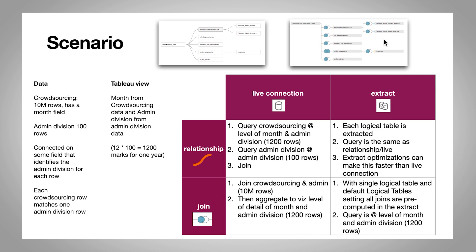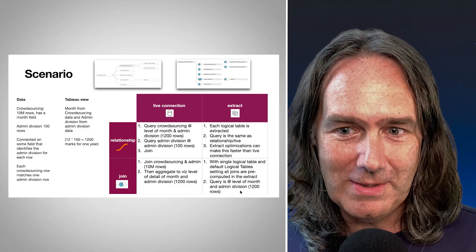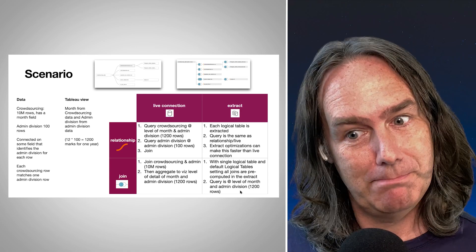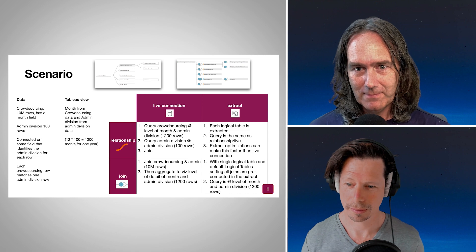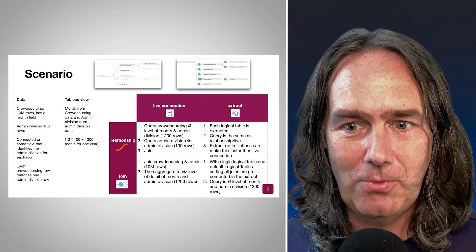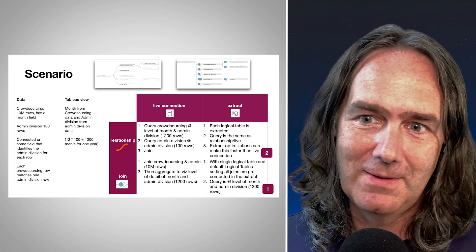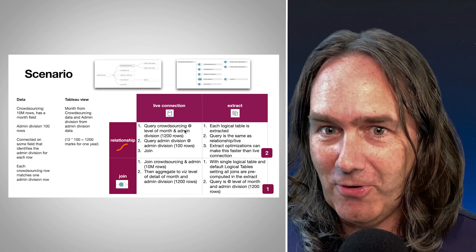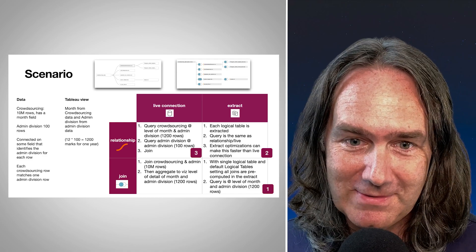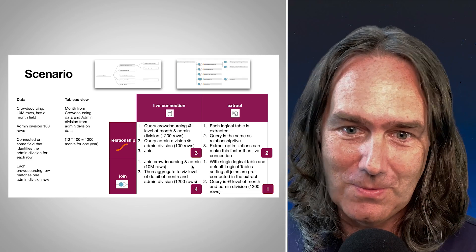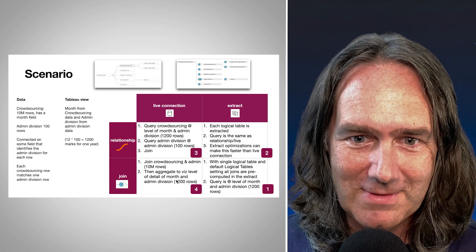For the join extract with one logical table and the default logical table setting, all those joins are pre-computed in the extract — that heavy work happened in the middle of the night when the extract ran. At query time, it's just pulling 1,200 rows with a very narrow query against a 10 million record extract, which is fast. This produces the final ranking: join extract is fastest, relationship extract is second, live relationship is third, and live join is slowest.